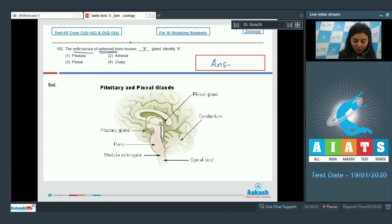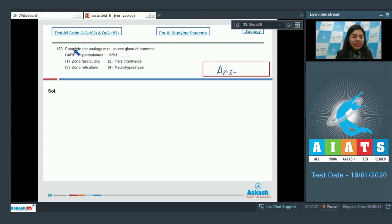The correct answer here would be option number one, pituitary. Adrenal glands are located above both kidneys, and pineal gland is located behind third ventricle of the brain between two cerebral hemispheres, and ovaries are located in lower abdominal cavity. The correct answer is one, pituitary gland.